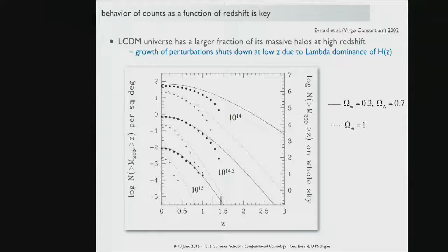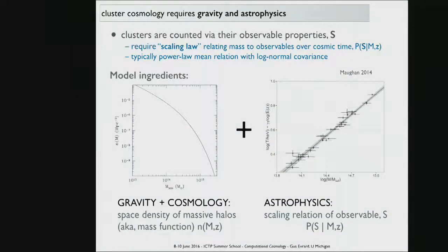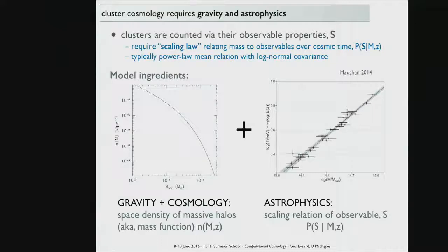That sets the general idea of cluster cosmology through counts. The mass function — the space density as a function of mass and redshift — is well-calibrated by N-body experiments. But we don't count clusters as a function of total mass in 3D; instead, we measure a mass proxy like temperature, X-ray luminosity, or galaxy number. We need to understand how that mass proxy scales with mass, convolving the mass function with the likelihood of the observable given mass and redshift. The current bottleneck is a weak understanding of these scaling relations.